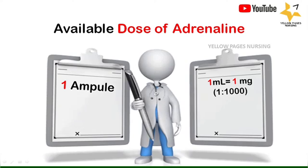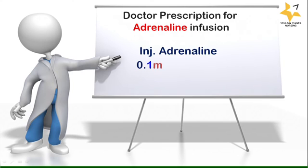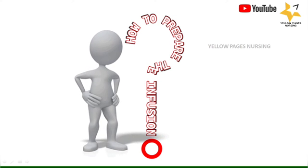Now let's get into the calculation part. The first example is a doctor's prescription for adrenaline infusion: injection adrenaline 0.1 microgram per kg per minute. Now, how do we prepare the infusion?